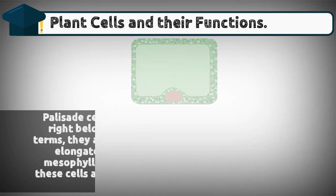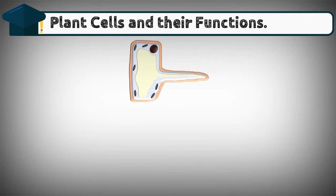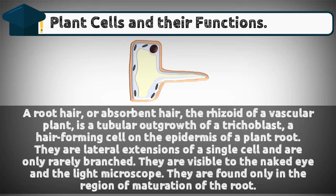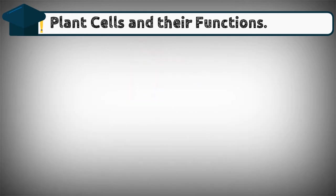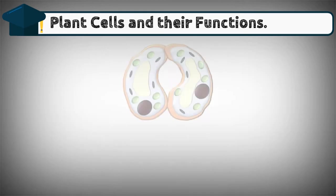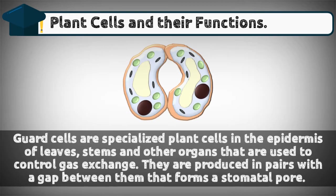A root hair, or absorbent hair, is a tubular outgrowth of a trichoblast — a hair-forming cell on the epidermis of a plant root. They are lateral extensions of a single cell and are only rarely branched. They are visible to the naked eye and under the light microscope, and are found only in the region of maturation of the root.